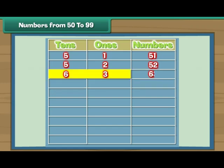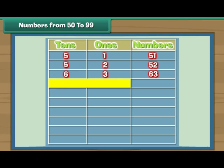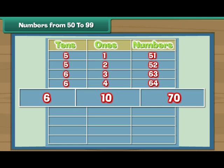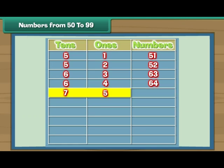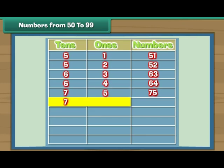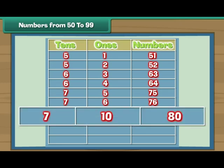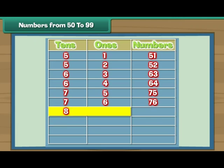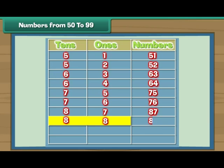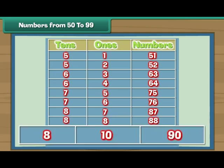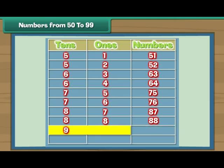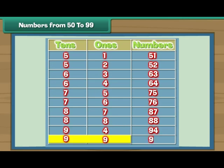Six tens and three give 63. Six tens and four is 64. Six tens and ten is 70. Seven tens and five is 75. Seven tens and six is 76. Seven tens and ten is 80. Eight tens and seven is 87. Eight tens and eight is 88. Eight tens and ten is 90. Nine tens and four is 94. Nine tens and nine is 99.